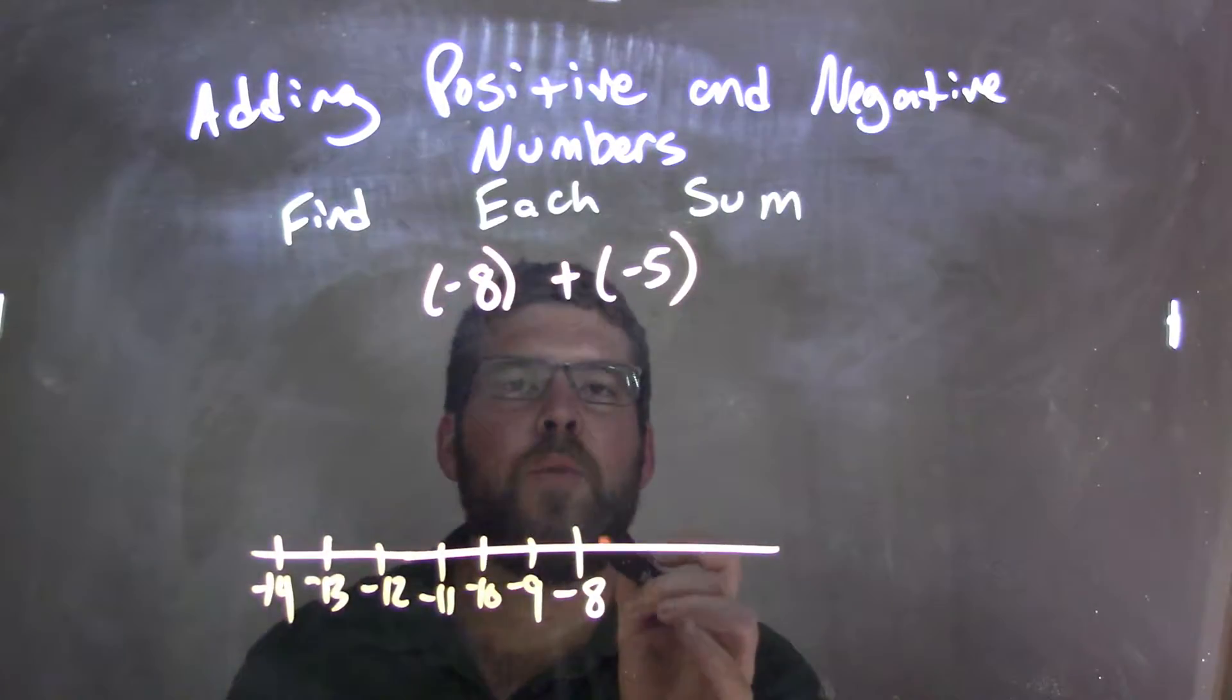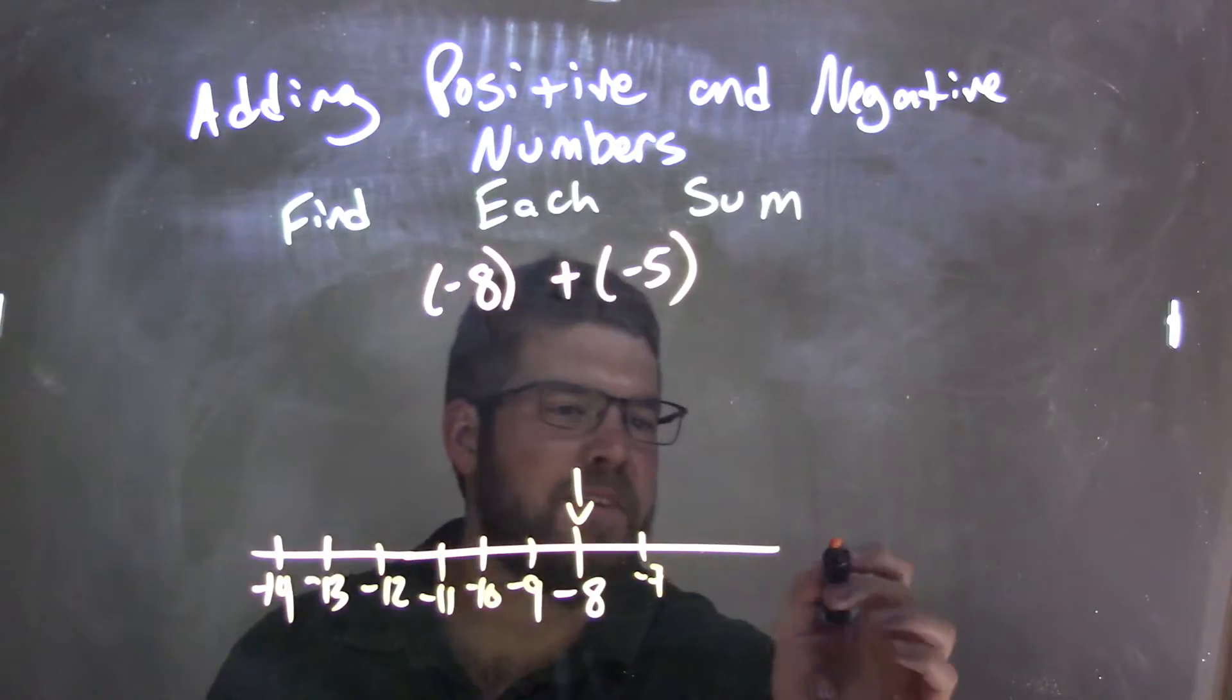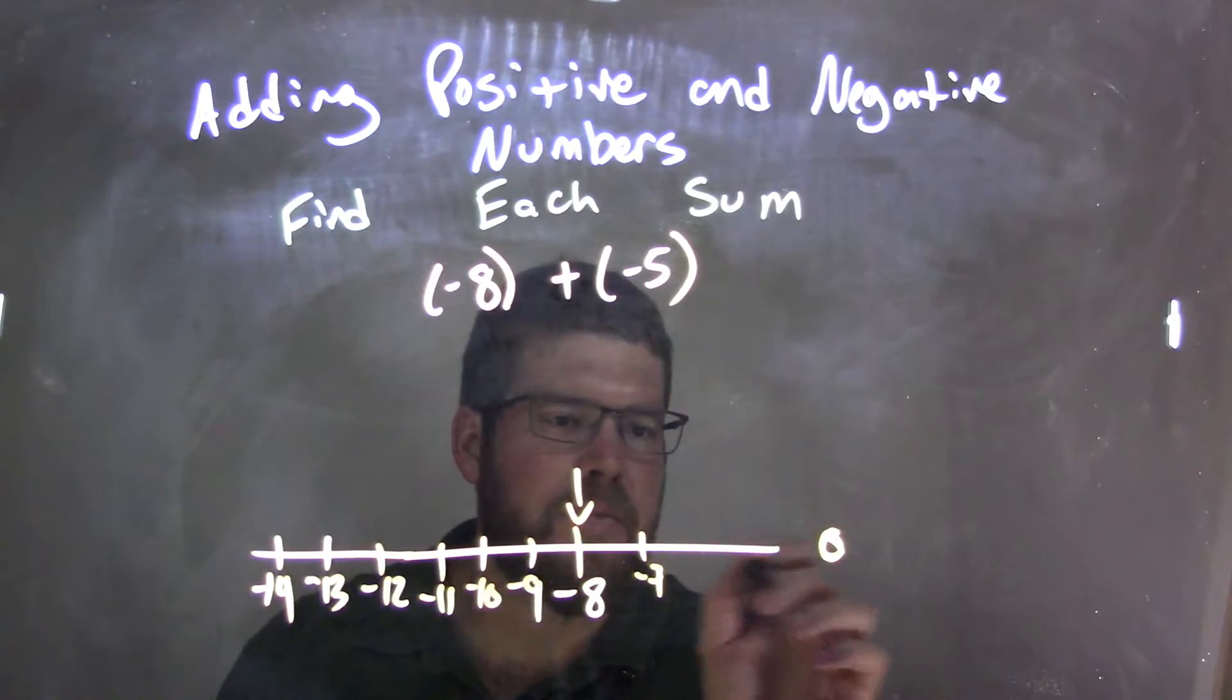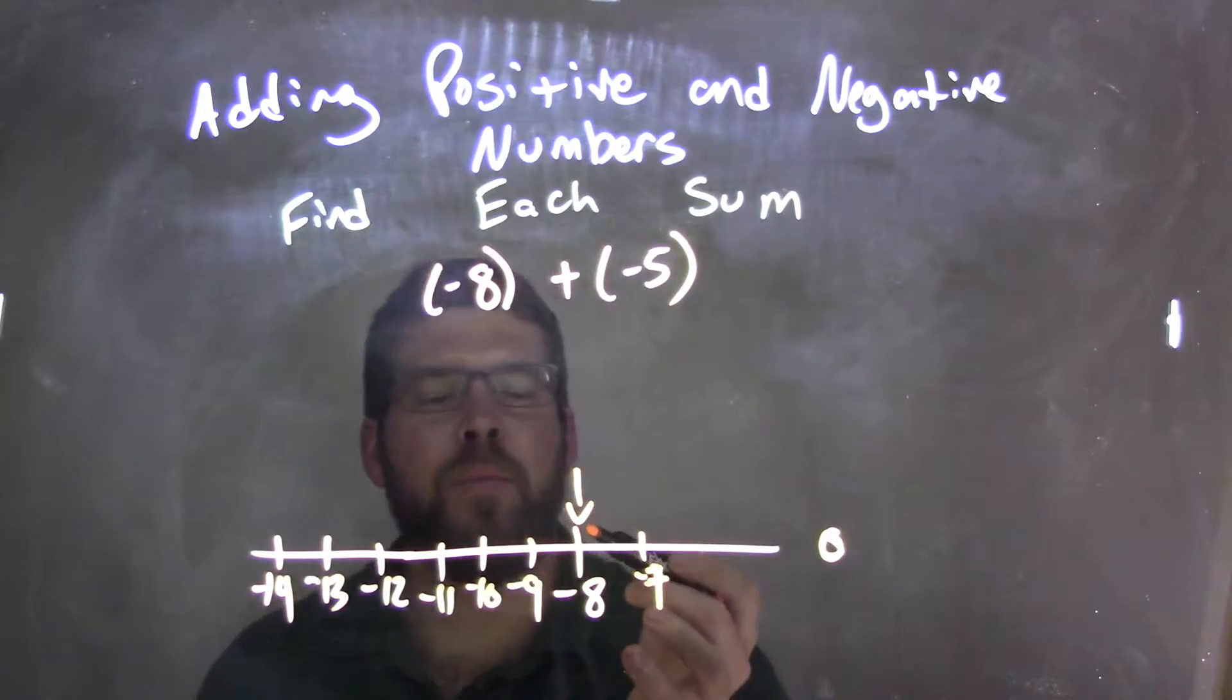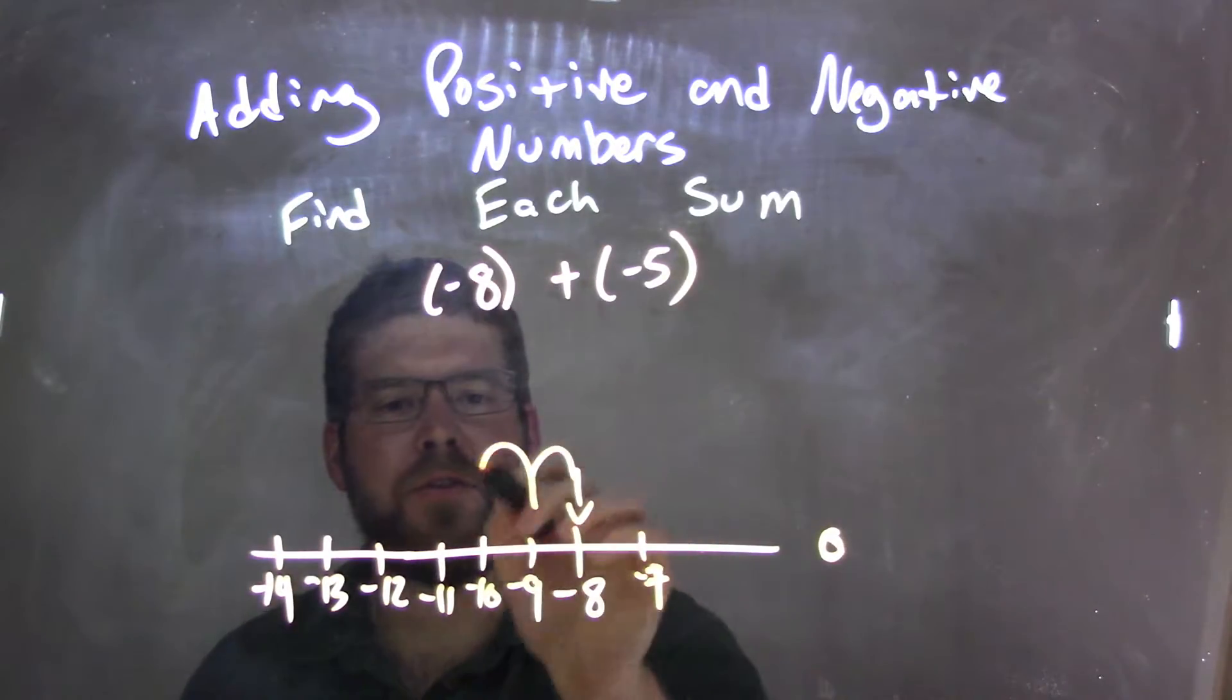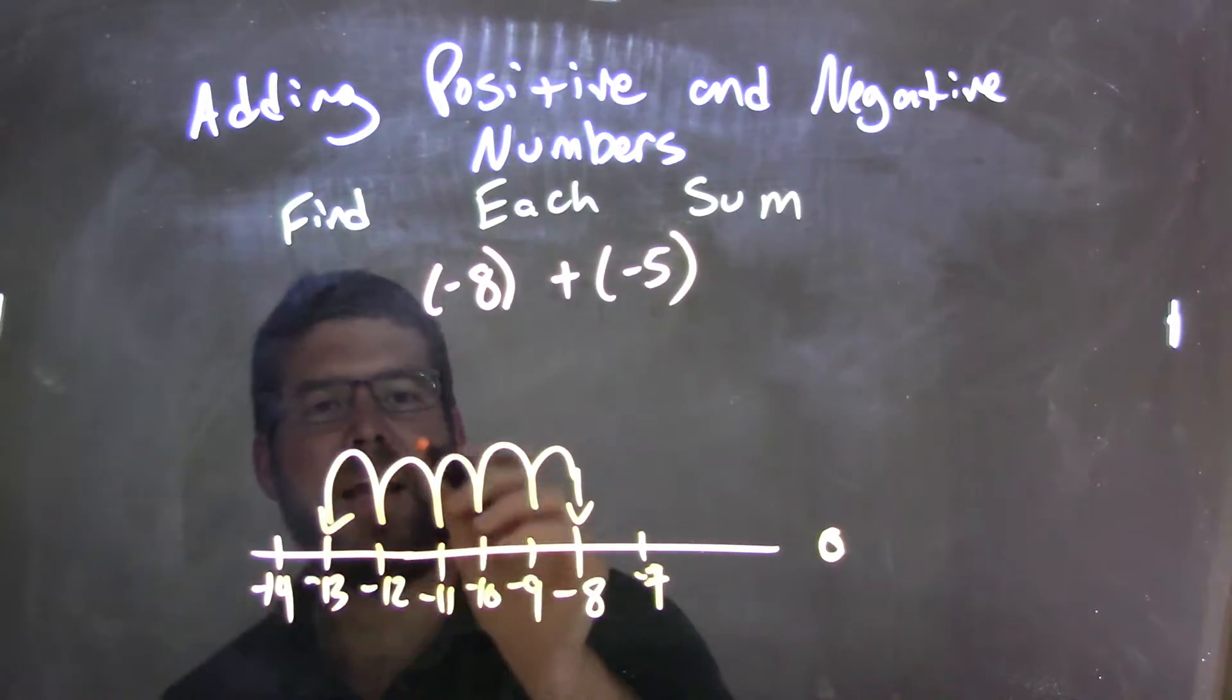So now we have negative 8, and we need to add 5 units. Zero is somewhere over here, but we don't need that right now. So we start with negative 8, we need to move to the left 5 units: 1, 2, 3, 4, 5, and there we have it, negative 13.